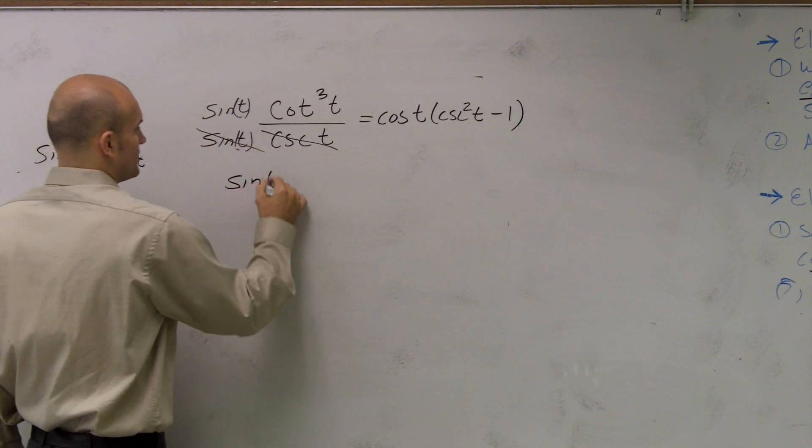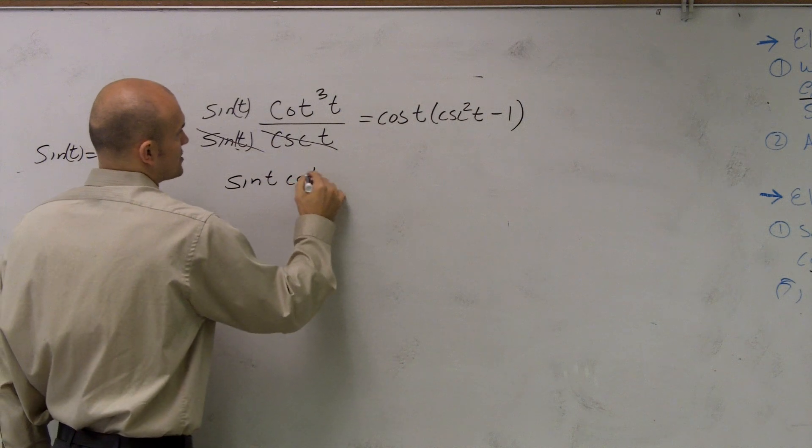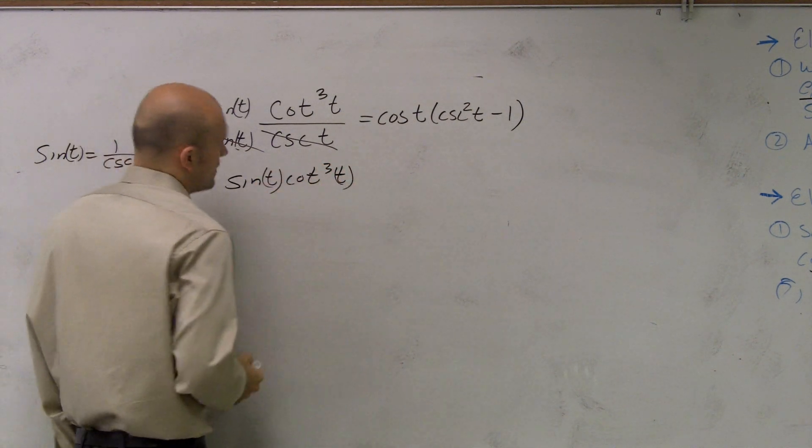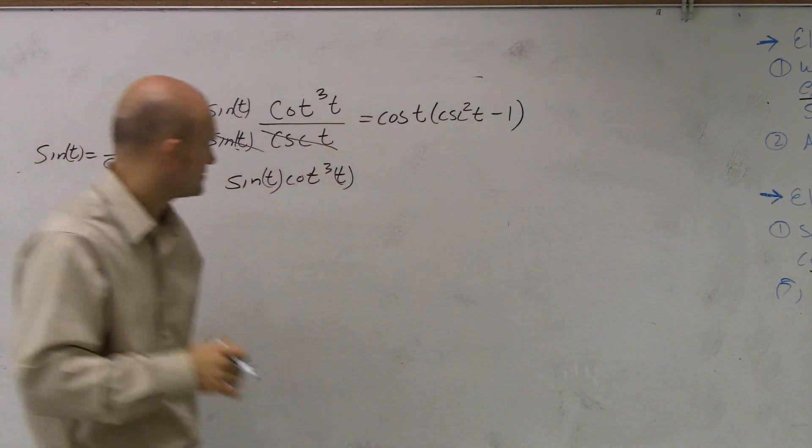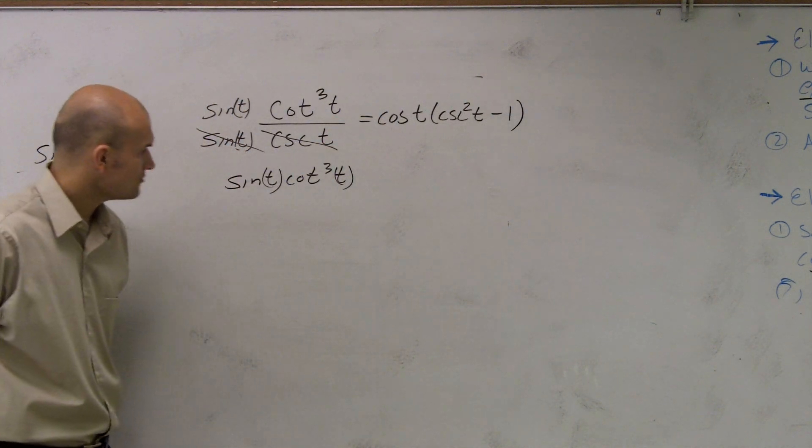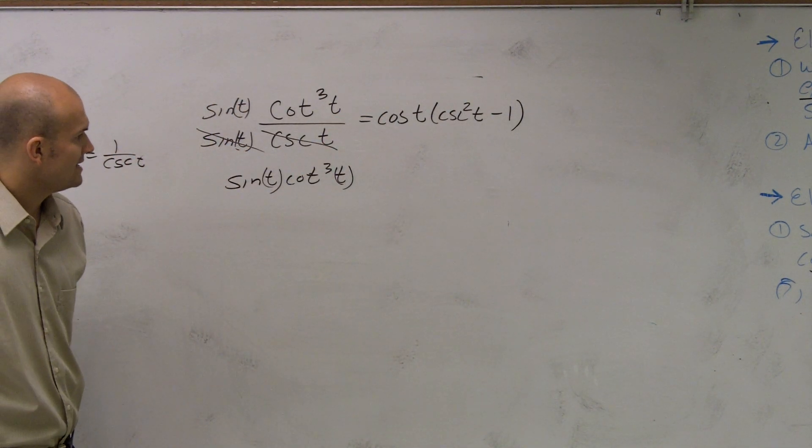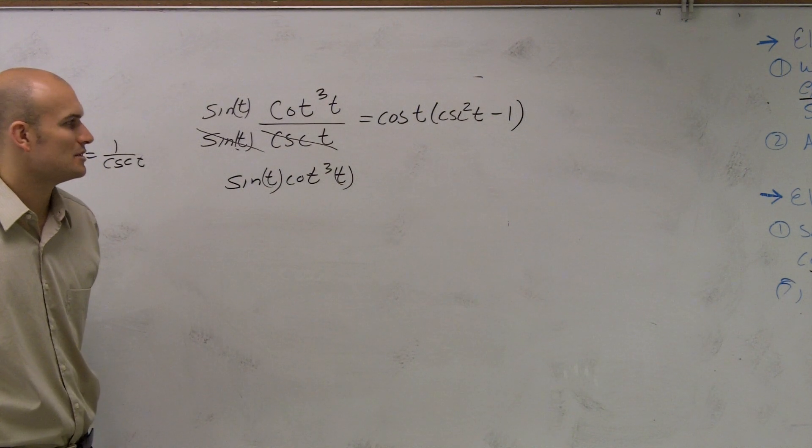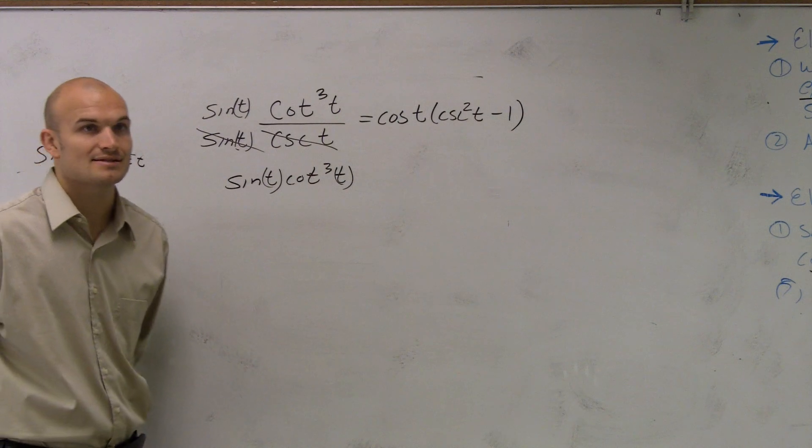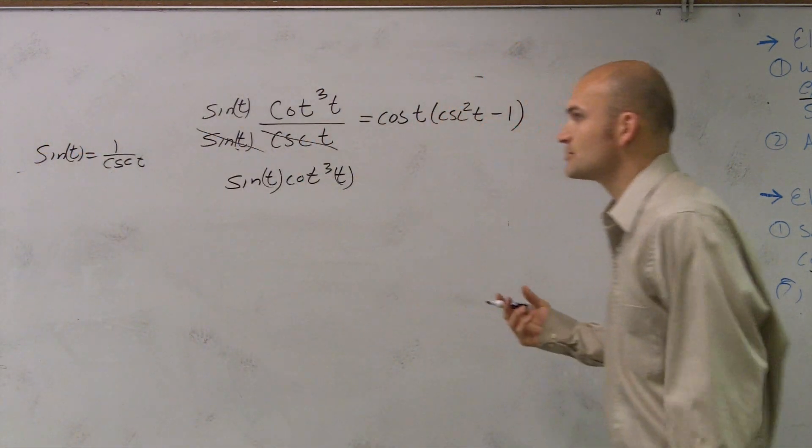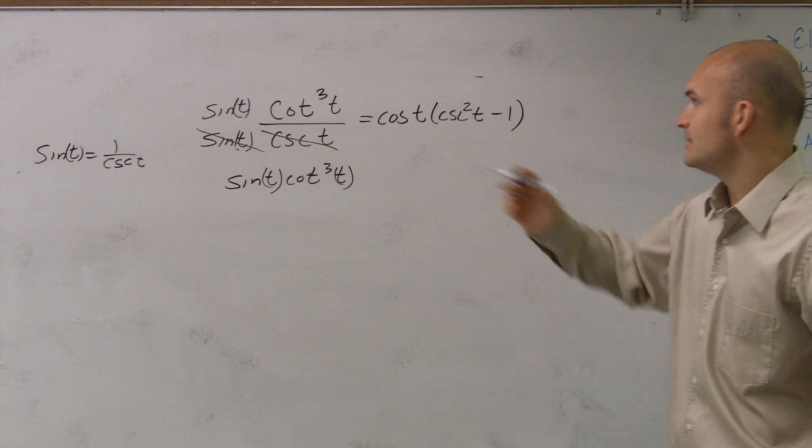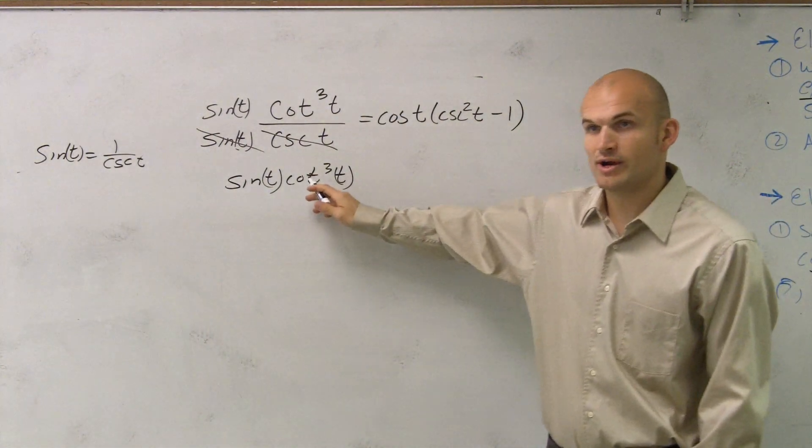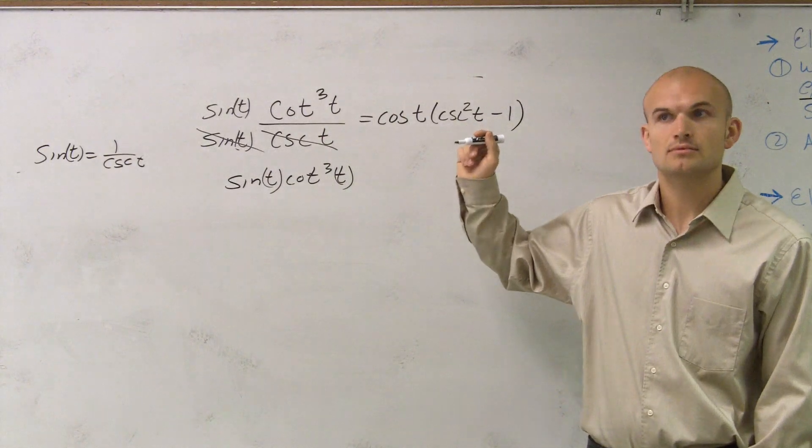So now I have sine of t times cotangent cubed of t. And now we need to make that look like that. Well, I need to get rid of the sine and make it a cosine. And I need to get cotangent to equal cosecant. Now, I do know that cotangent squared is going to give me cosecant minus 1, right? Cotangent squared gives me cosecant minus 1, correct?